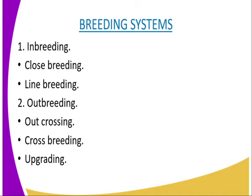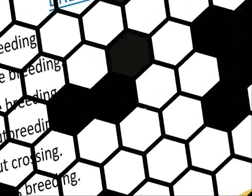Then we have crossbreeding. Crossbreeding, on the other hand, is the mating of two animals from different breeds. For example, a Friesian and a Jersey. Then we have upgrading. Upgrading is a type of crossing where the female of low breed stock is mated with a pure breed sire — that is, a bull of high or desirable characteristics.